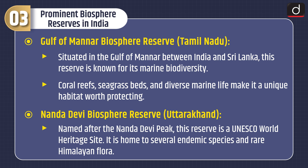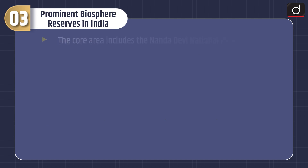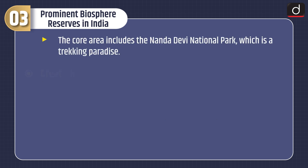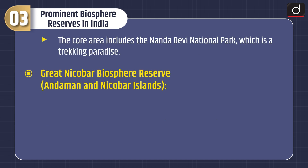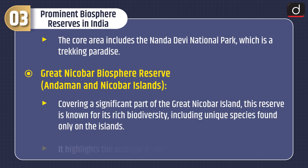The fourth one is the Nanda Devi Biosphere Reserve, Uttarakhand. Named after the Nanda Devi Peak, this reserve is a UNESCO World Heritage Site. It is home to several endemic species and rare Himalayan flora. The core area includes the Nanda Devi National Park, which is a trekking paradise.